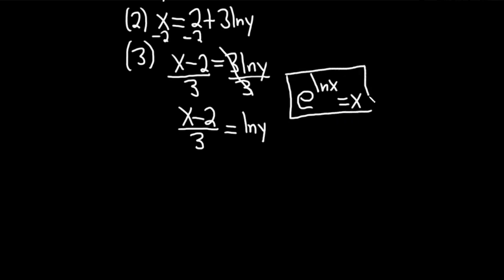And so what we're going to do now is in order to get rid of the ln, we're going to exponentiate both sides. I'm going to put an e here and an e here. And basically all of this is the exponent. So this is e to the x minus 2 over 3 equals e to the ln y.